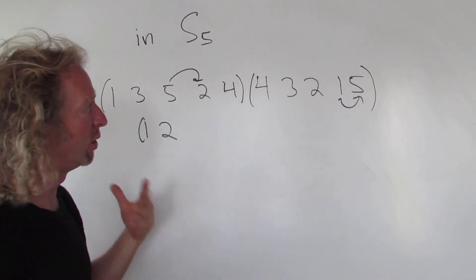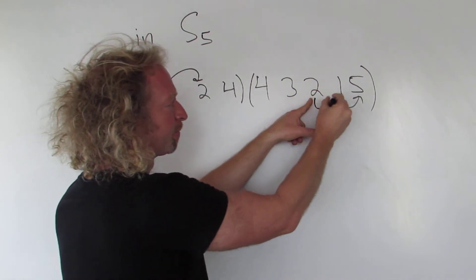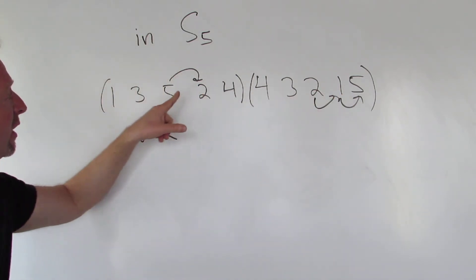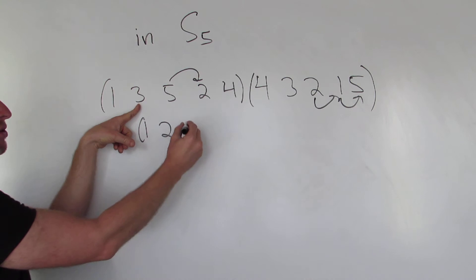Then you go to the next one. So 2. Where does 2 go? 2 goes to 1. Then you look over here. You say where does 1 go? 1 goes to 3. So 2 goes to 3.